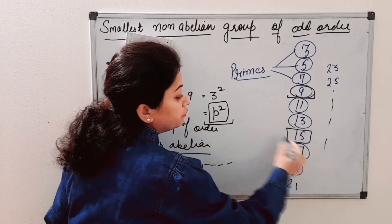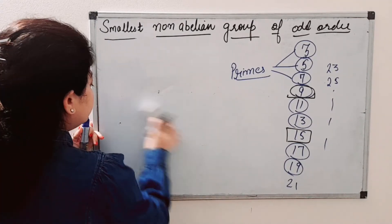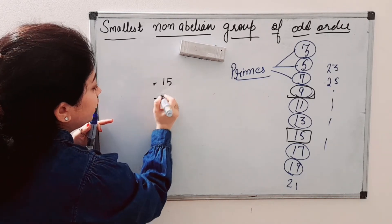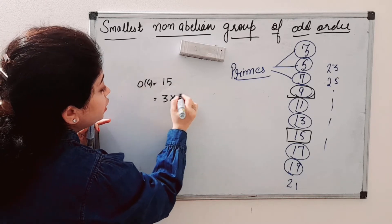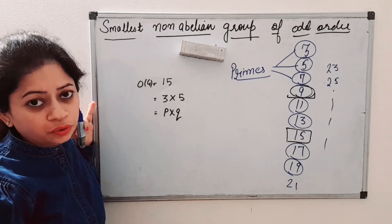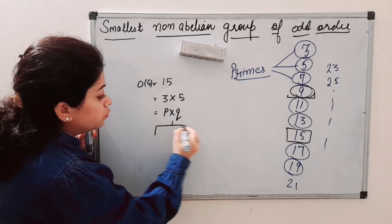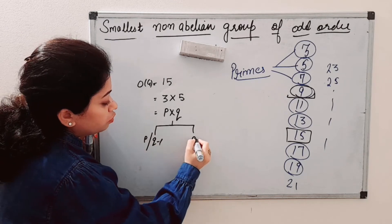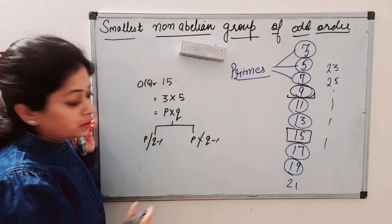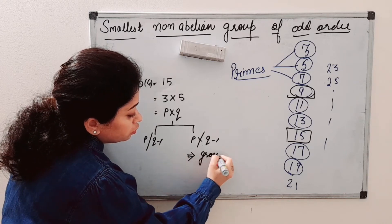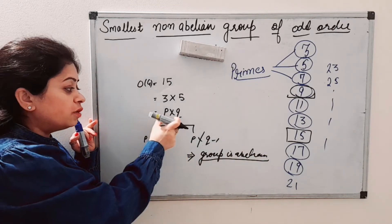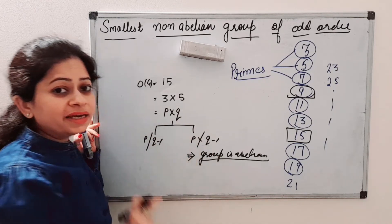Next we jump to the group of order 15. This is very important. We can write the order of the group as 15 = 3 × 5, which is of the form pq. When we have a group of order pq, we check: either p divides (q − 1) or p does not divide (q − 1). When p does not divide (q − 1), this implies the group is abelian.